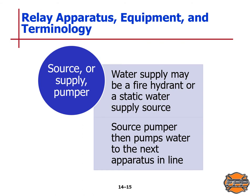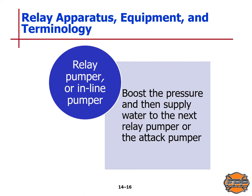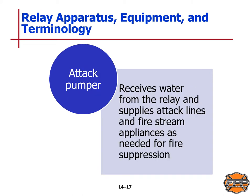Your source pumper or supply pumper may be getting water from a fire hydrant or a static water supply source. That source pumper then pumps water to the next apparatus in line. The relay pumper or inline pumper is there to help boost the pressure and then supply that water to the next relay pumper or the attack pumper. You can have one or more relay pumpers. Then your attack pumper receives water from the relay and supplies attack lines and fire stream appliances as needed for fire suppression at the scene.